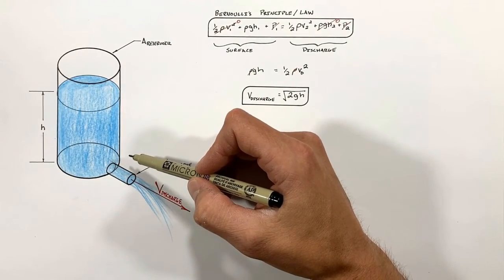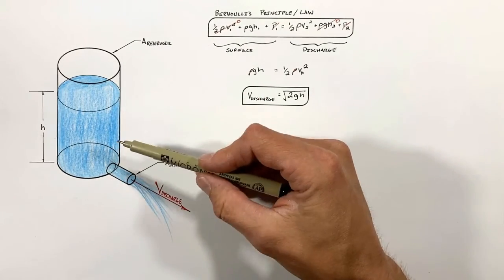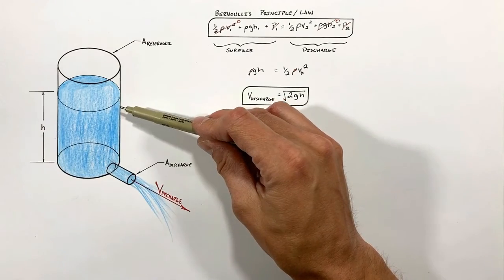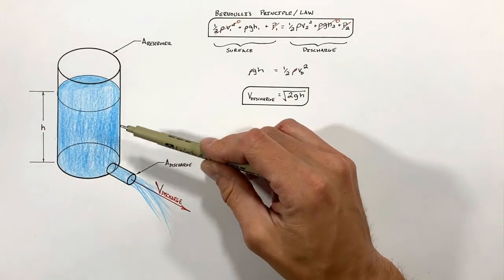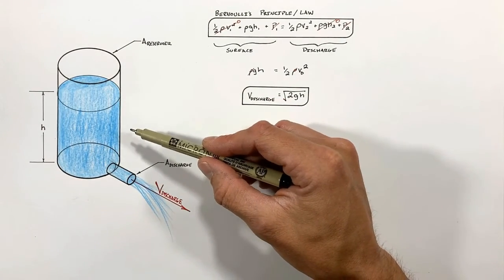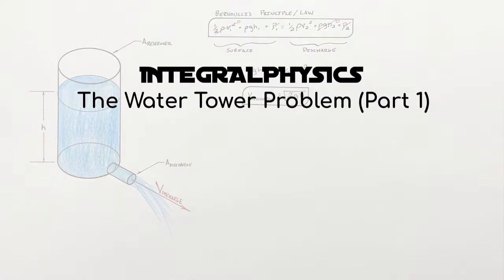Now in addition to solving for discharge velocity, there's another common problem associated with this situation and that is the total time for this tank to drain. So stick around and we'll work that one out in part two of this video. I hope to see you then.